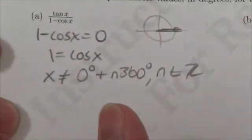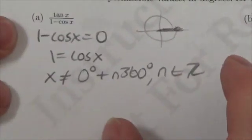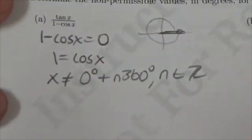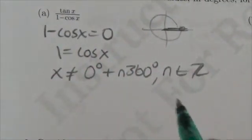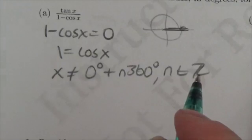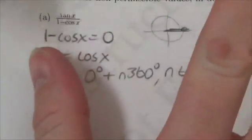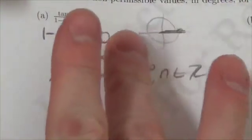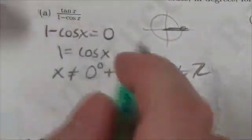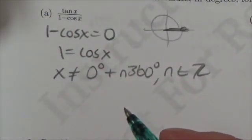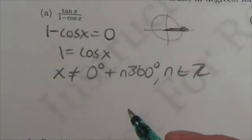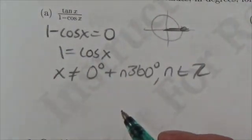Now, it would be very tempting to stop right here and say that that's it. However, this expression has a tangent in it. Tangent actually has its own denominator. And in fact, if you see a tangent, a cotangent, a cosecant, or a secant in an expression, you have to consider those factors as well, because they each carry with them their own set of restrictions.